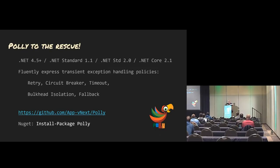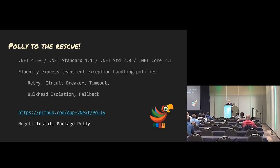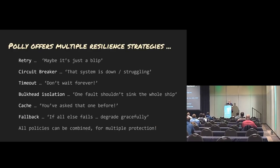Basically, you use the fluent syntax to create these policy objects, and these are some of the policies that you can create: a retry, a circuit breaker, a timeout, a bulkhead isolation policy — and we'll talk about all of these things. You can go to github.com/app-vnext/polly, and polly-samples is where the sample code I'm showing you is.